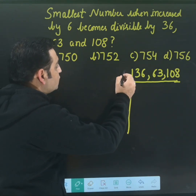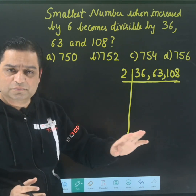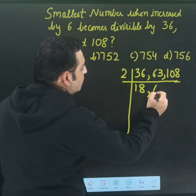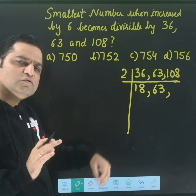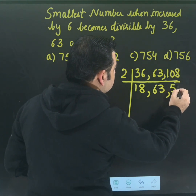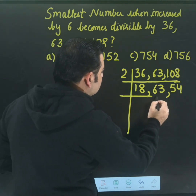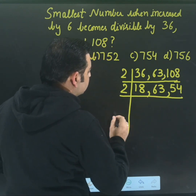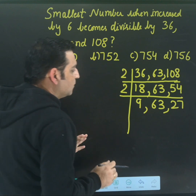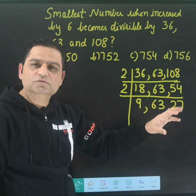For example, I'll start with prime 2. As long as even a single number is divisible by 2, I will not stop. 2 times 18 is 36; 63 is not divisible by 2 so keep it as it is. 108 divided by 2 is 54. Still 18 and 54 are divisible by 2, so divide again: 2 times 9 is 18, this becomes 27, and 54 divided by 2 is 27. Now the game of 2 is over — no number is divisible by 2.